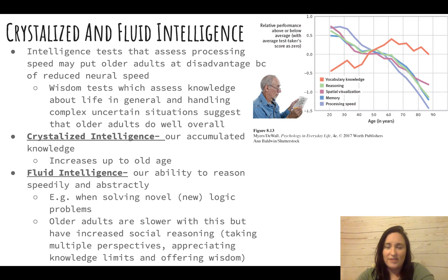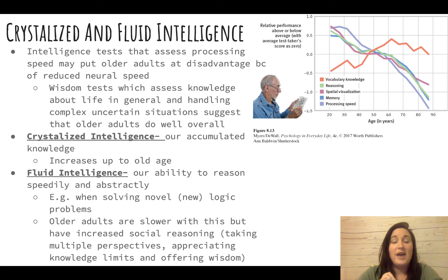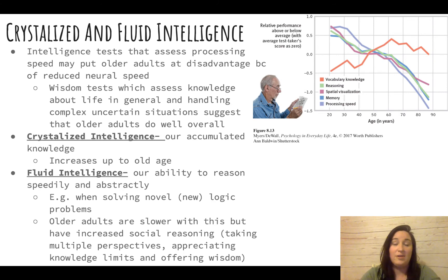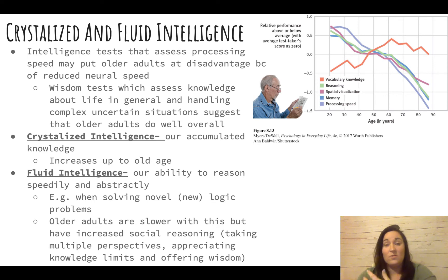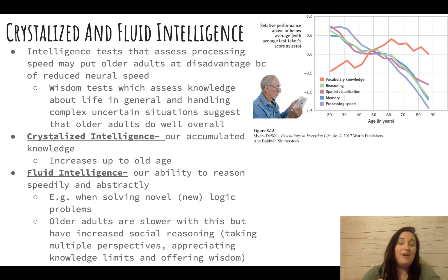There is a notable drop-off around age 70 or so. That is fluid intelligence — our processing speed and ability to handle novel tasks, like figuring out a brand new video gaming system. Younger adults are much faster at picking up new things, while older adults tend to be better with vocabulary knowledge but not as strong with processing speed.